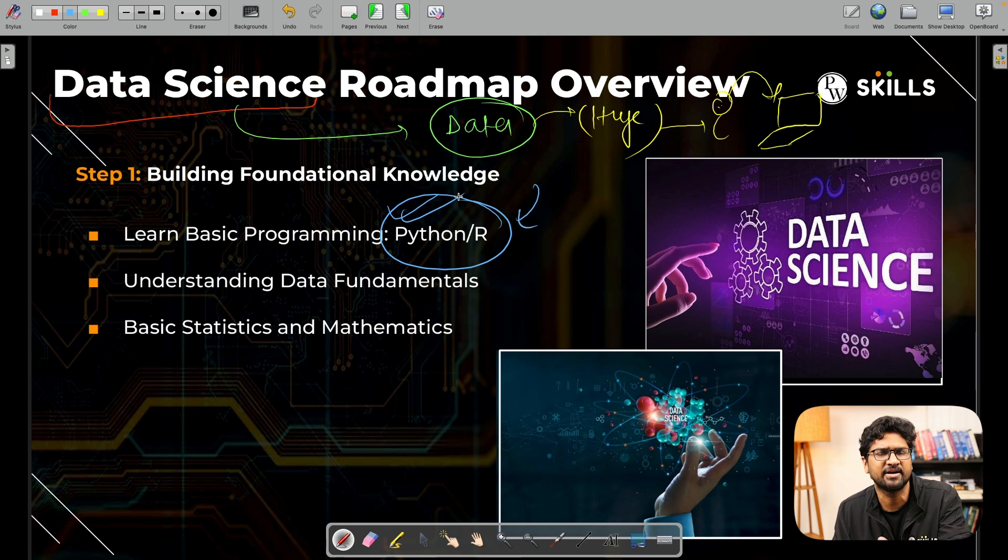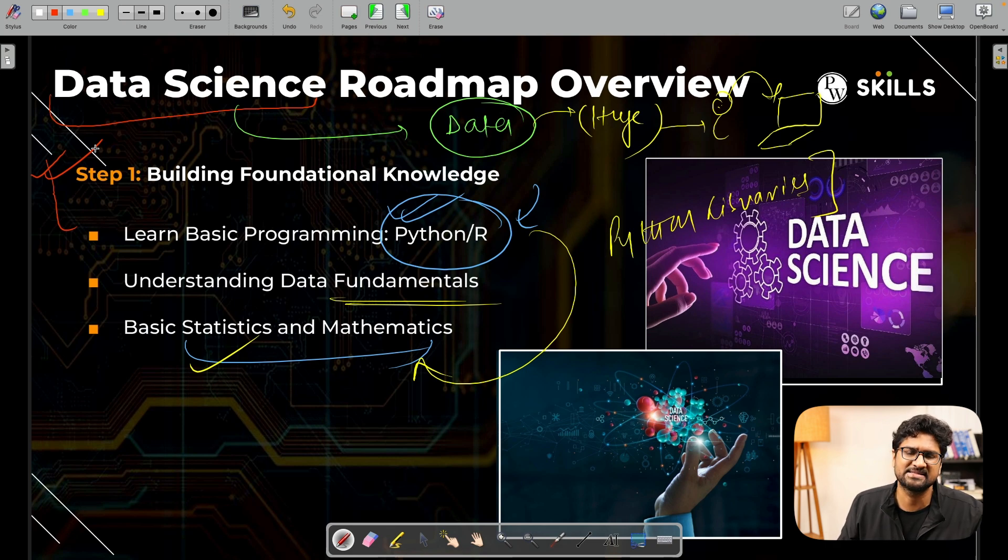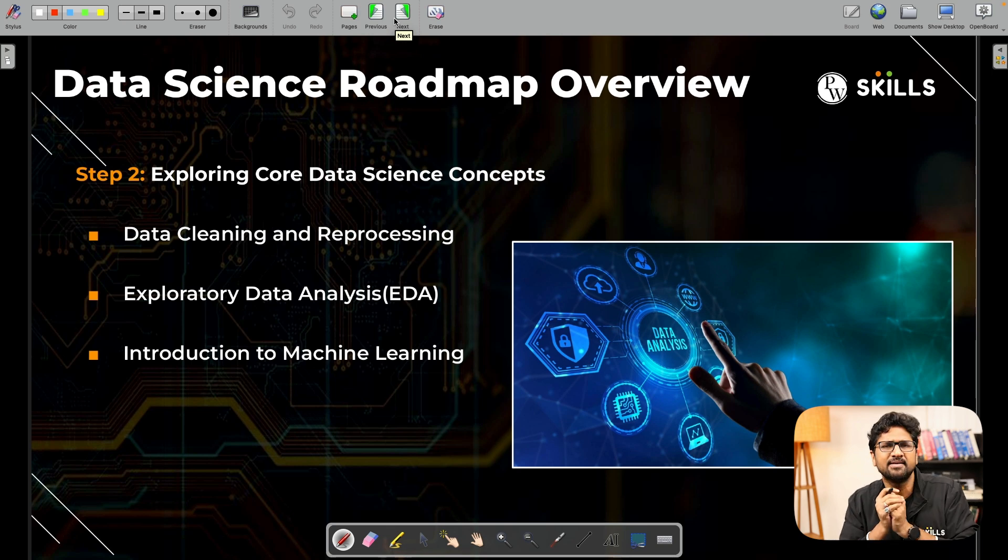Once you've learned Python programming, the next thing you need is how to take out insights from the data. You need to understand the basic math - how data manipulation happens. Statistics, mathematics, and statistics are very crucial for you to become a good data scientist. Once that happens, Python will help you apply these, and you'll learn data fundamentals.